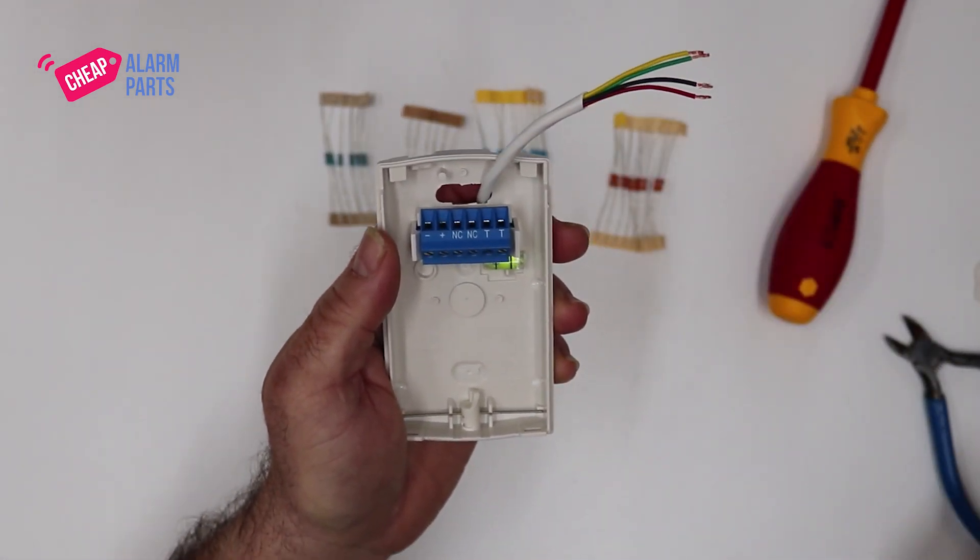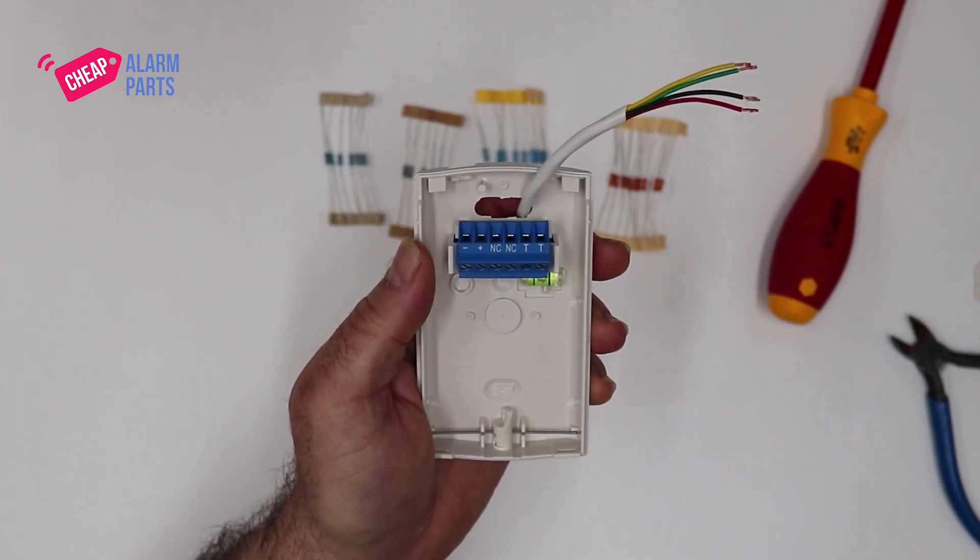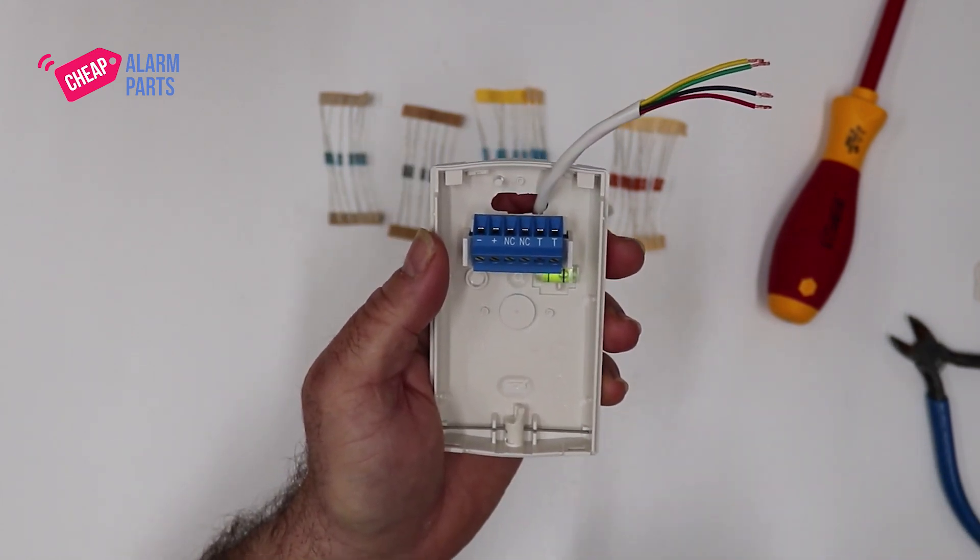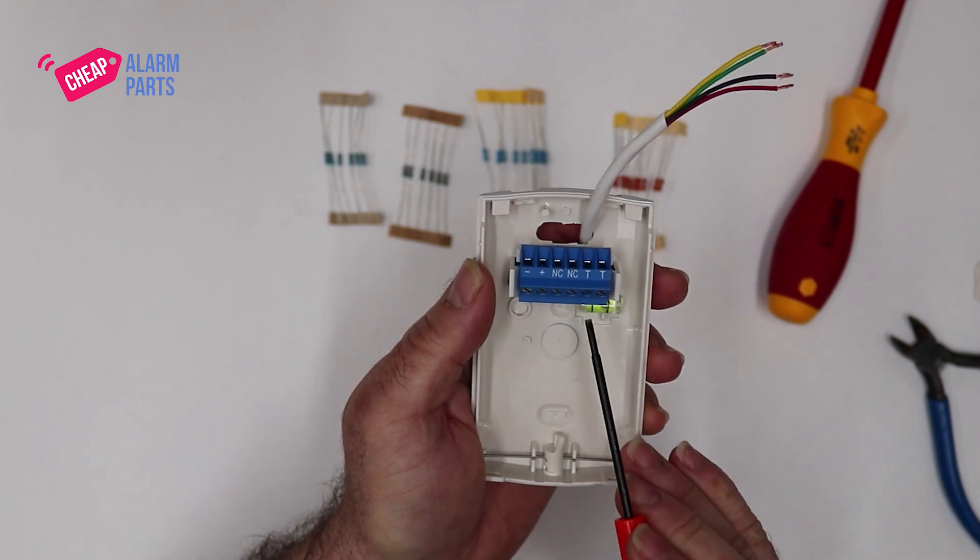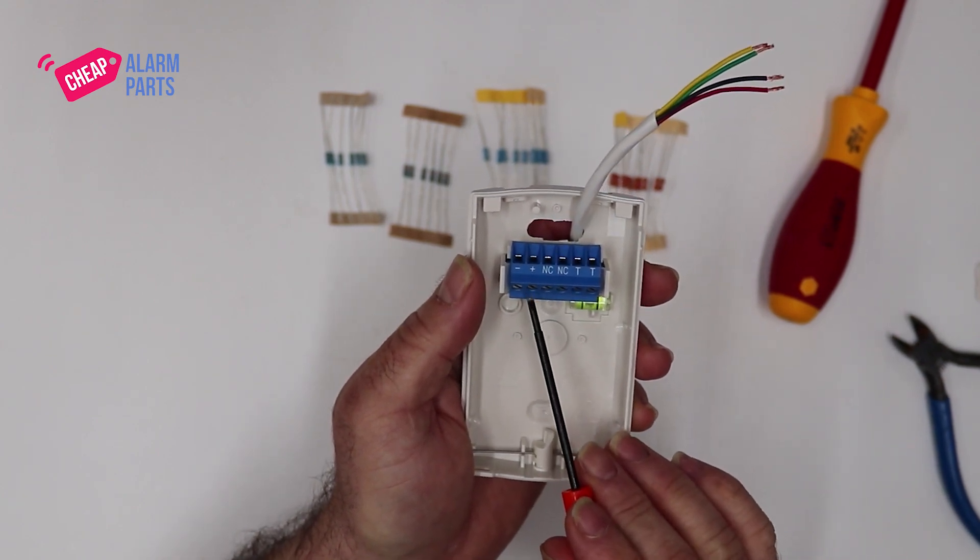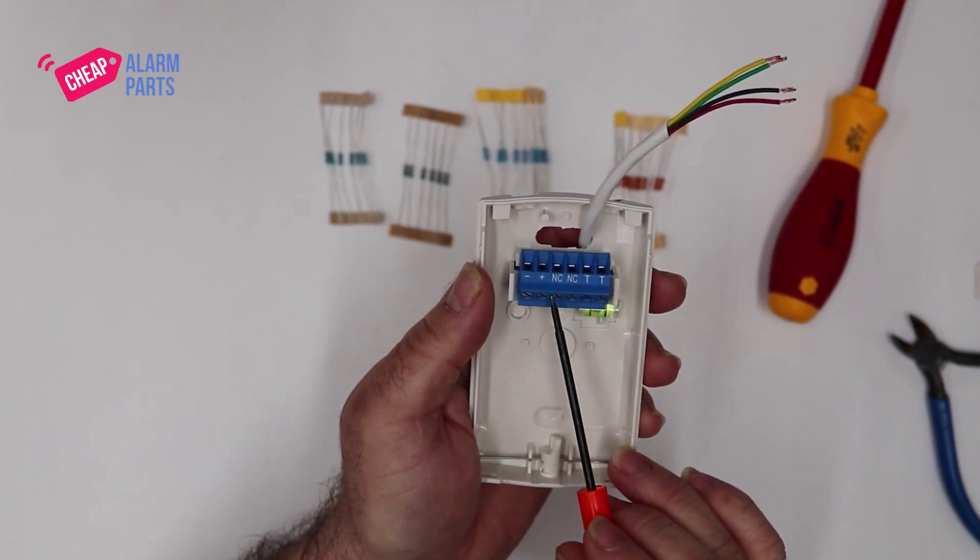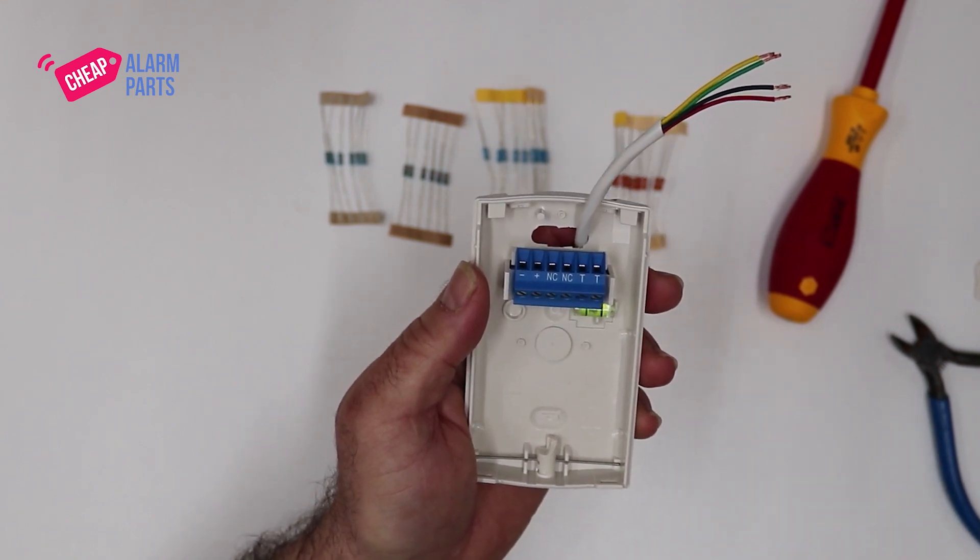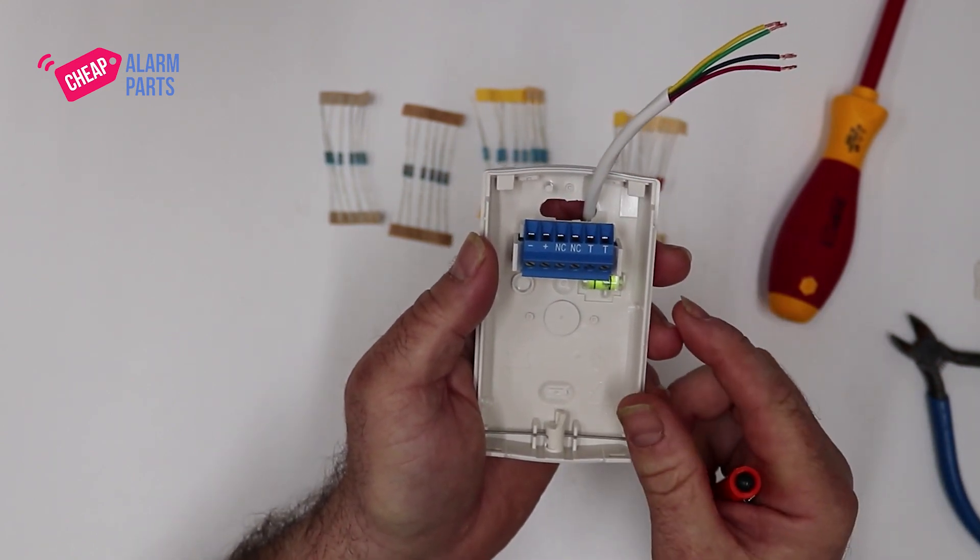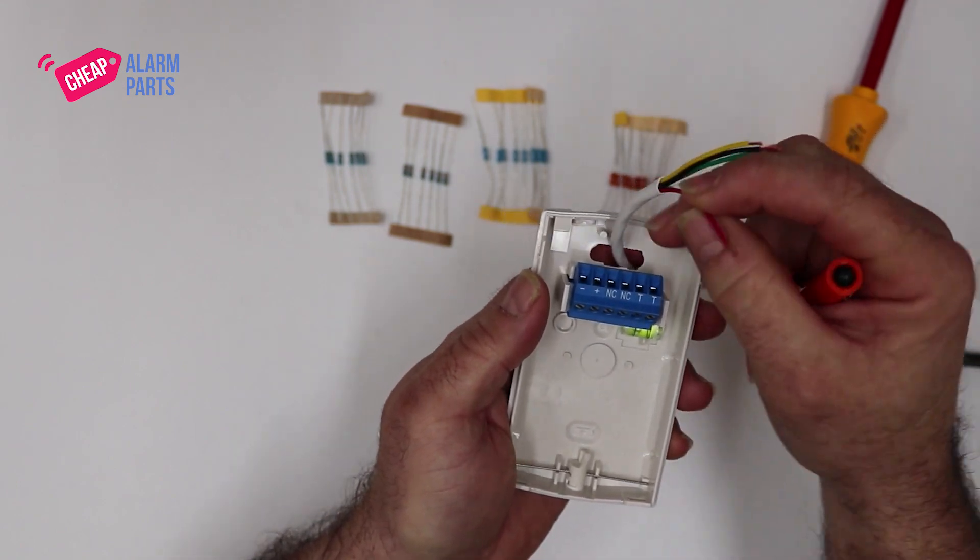Inside the detector, there are six connectors. The first two are 12-volt power for the unit. We usually use the red and black cables for this. It's polarity conscious, so make sure the negative goes into the negative and the positive goes into the positive.